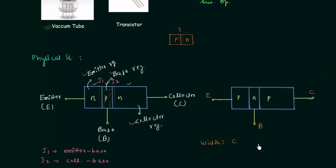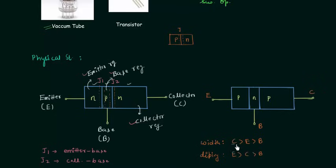Comparing the width of the three regions: the collector has the maximum width, then the emitter, and the base has the minimum width. Comparing doping: the emitter has the maximum level of doping, then the collector, and the base has the minimum doping. The size of the collector is maximum because it has to collect electrons and heat is produced in it — so greater width means better heat dissipation.